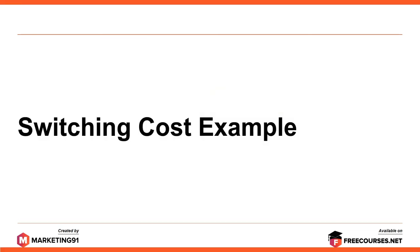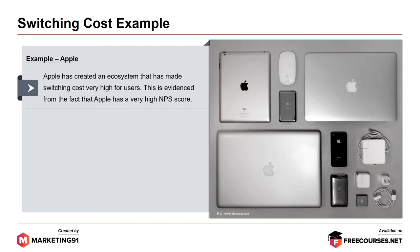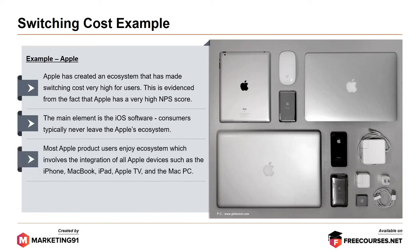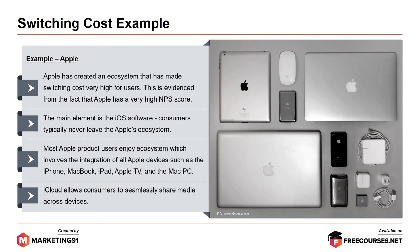Switching cost examples. The first brand: Apple. Apple has created an ecosystem that has made switching cost very high for users, evidenced by Apple's very high NPS score. The main element is the iOS software — consumers typically never leave Apple's ecosystem. Most Apple product users enjoy an ecosystem involving the integration of all Apple devices such as the iPhone, MacBook, iPad, Apple TV and the Mac PC. iCloud allows consumers to seamlessly share media across devices, and Apple TV's AirPlay allows music or videos from the iPhone or iPad to be effortlessly shared over Wi-Fi. Additionally, the inconvenience of transferring media files to Amazon Cloud Play or Google Play further dissuades iOS consumers from switching.